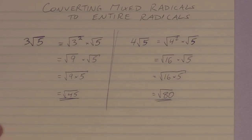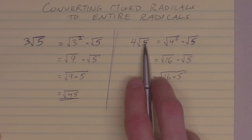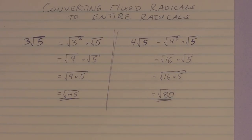So, by putting the coefficient back into the radical, converting it into the entire, I'm basically taking the coefficient, squaring it, and then multiplying by what's already underneath the radical.